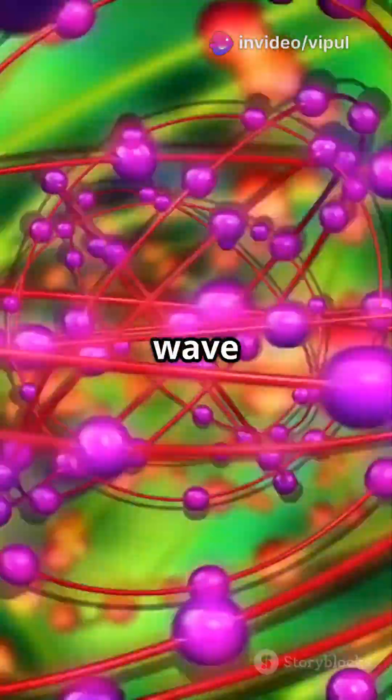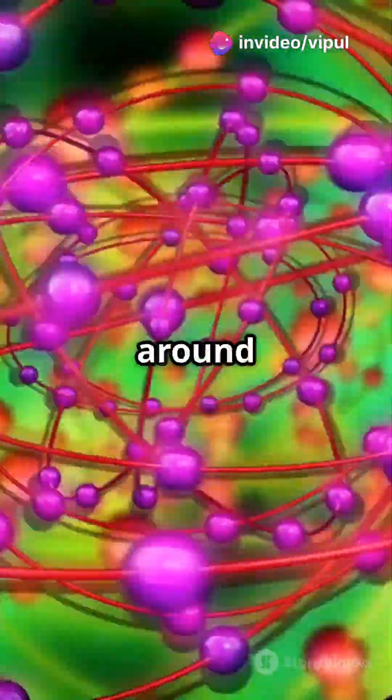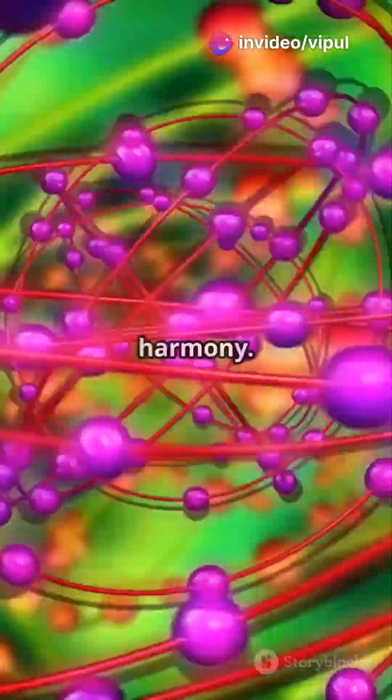This meant electrons have wave nature too, forming standing waves around the nucleus like vibrating strings in harmony.